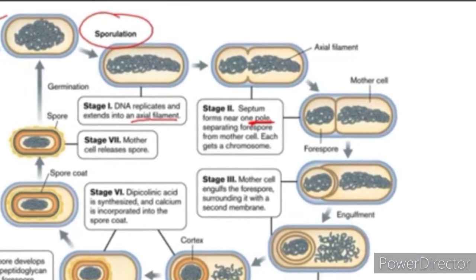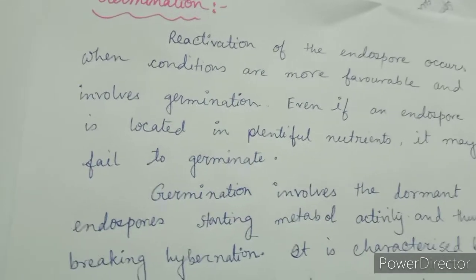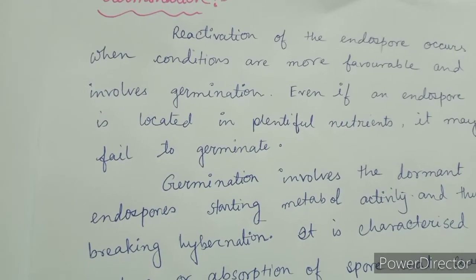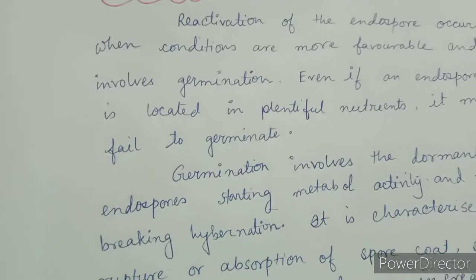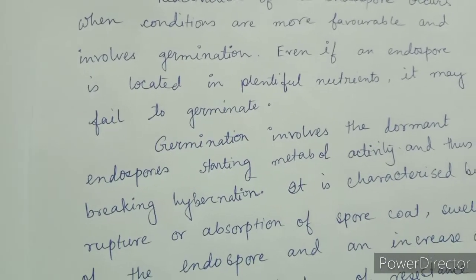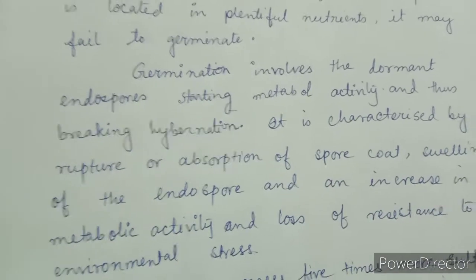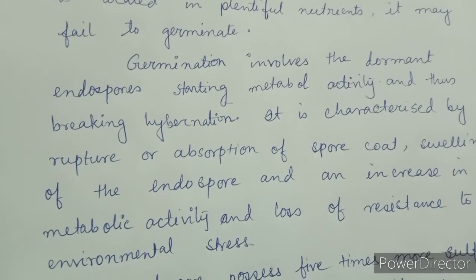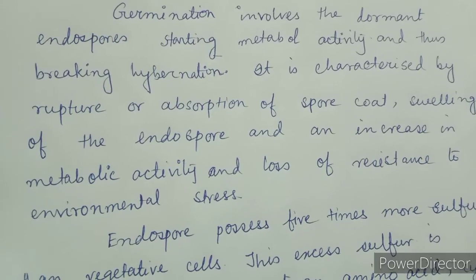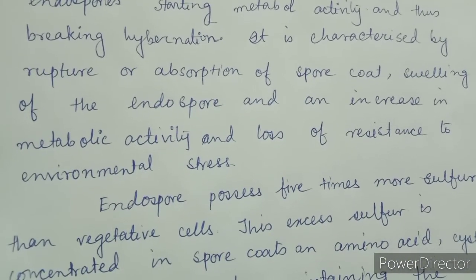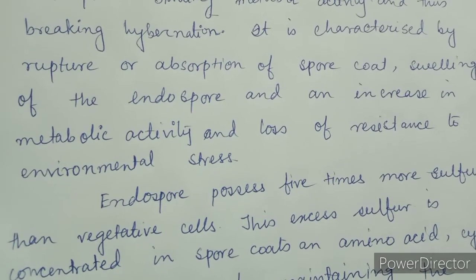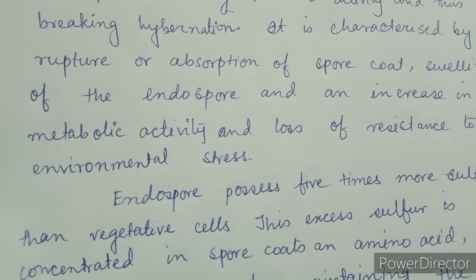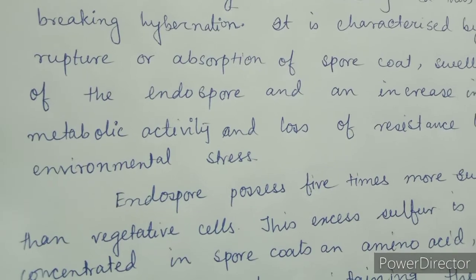Germination: Reactivation of the endospore occurs when conditions become more favorable and involves germination. Even if an endospore is located in plentiful nutrients, it may fail to germinate. Germination involves the dormant endospore starting metabolic activity and breaking hibernation. It is characterized by rupture or absorption of the spore coat, swelling of the endospore, an increase in metabolic activity, and loss of resistance to environmental stress.